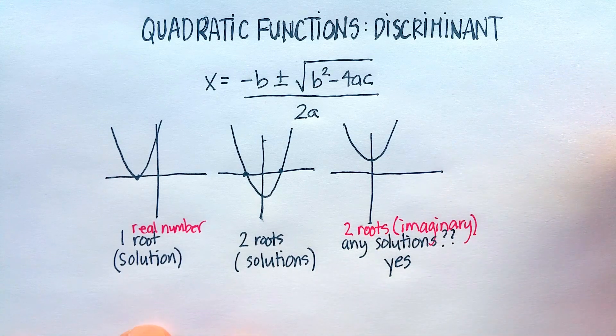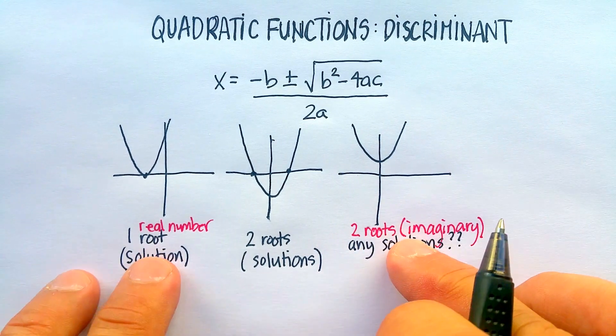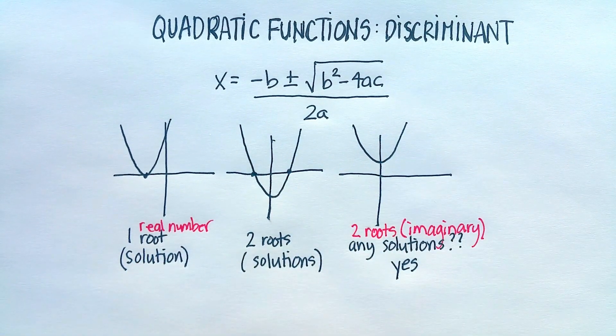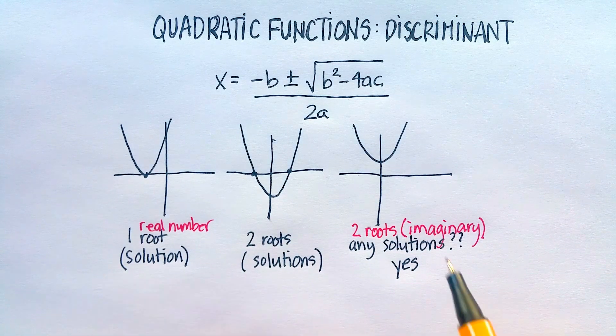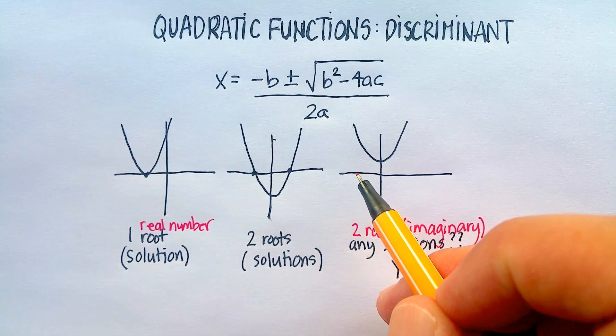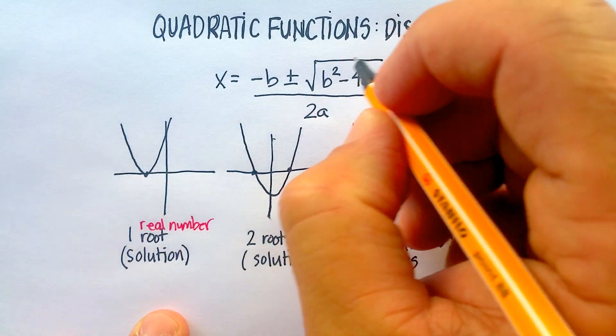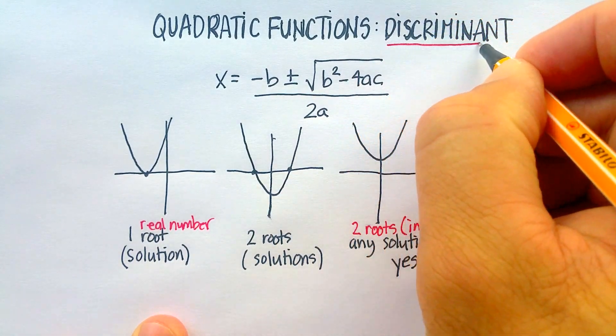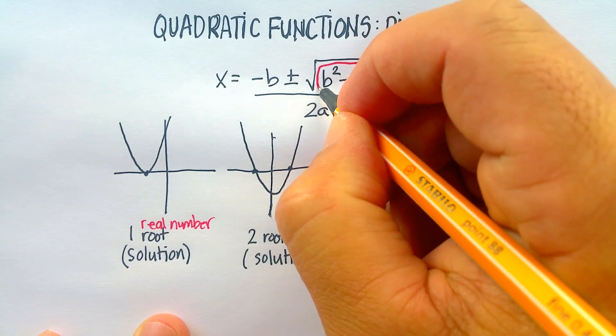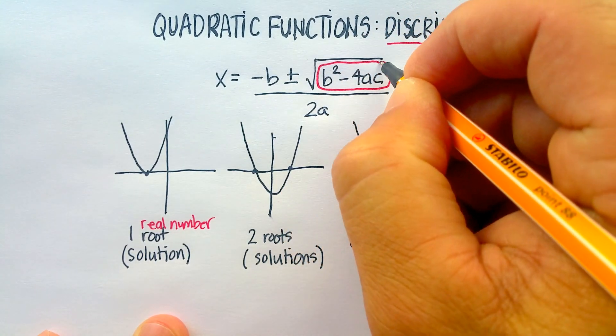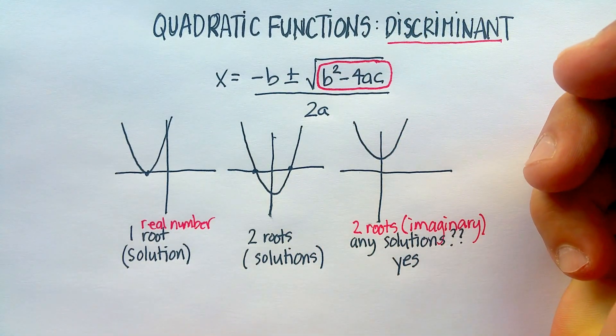So the answer to this question - yes there are, but they are imaginary numbers. We can talk about imaginary numbers in a separate video, but for right now I just want to show this. Now is there an easy way to figure out whether you're going to have a quadratic that crosses the x-axis or not? There is, and it's using something called the discriminant.